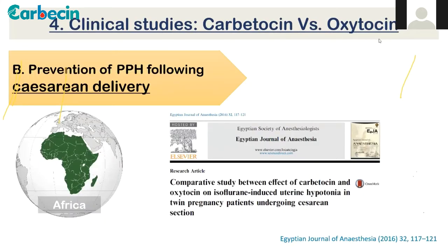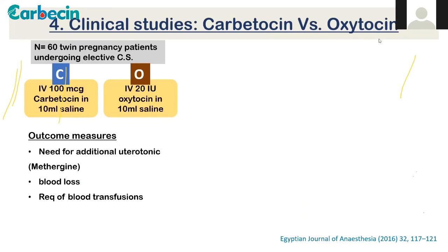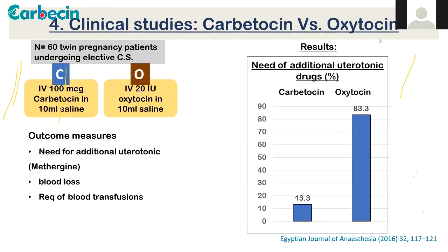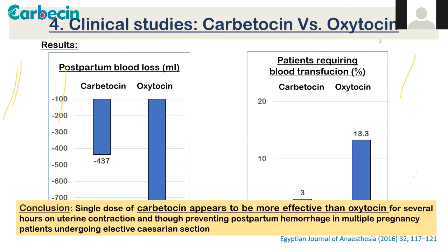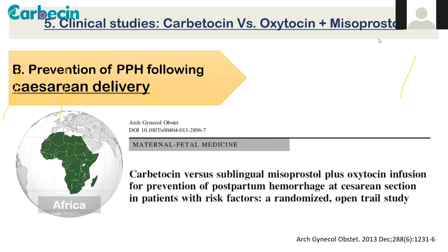A comparative study of carbetocin versus oxytocin for isoflurane-induced uterine hypotonia in twin pregnancies found profound differences: need for additional uterotonics like ergometrine was only 13% with carbetocin versus 83% with oxytocin; blood loss was 430 ml versus 720 ml; patients requiring blood transfusion were only 3 versus 13. This confirmed that single-dose carbetocin appears more effective for prevention of PPH following cesarean delivery.